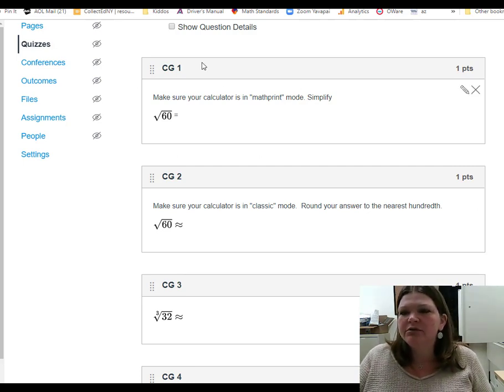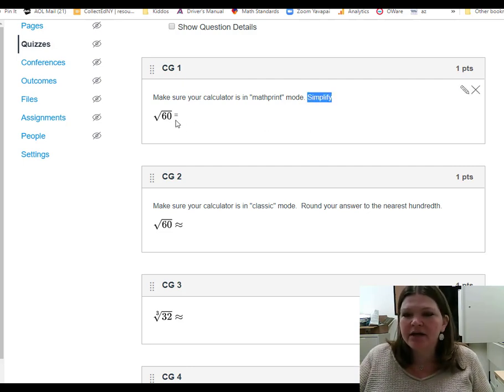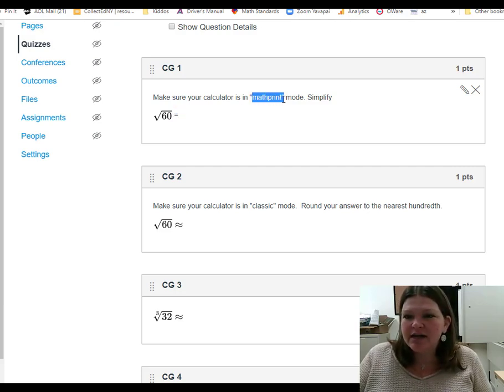So I have some clues here that number one wants an exact answer. One, it says just simplify, no language about rounding my answer. Also, this equal sign says that I'm expecting to know what this is exactly equal to. So anytime you want an exact answer, a really good idea is for you to be in math print mode in your calculator.